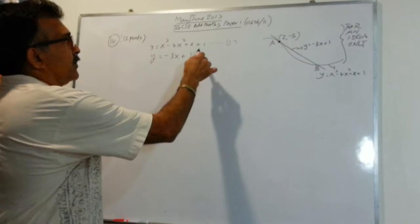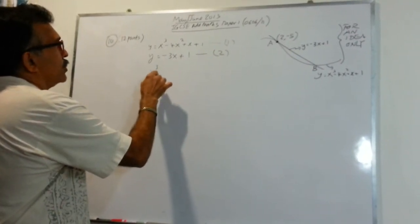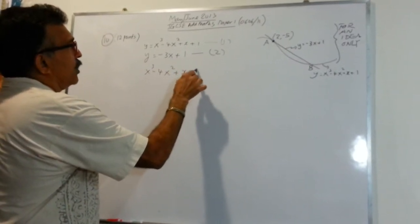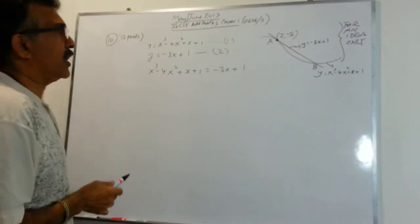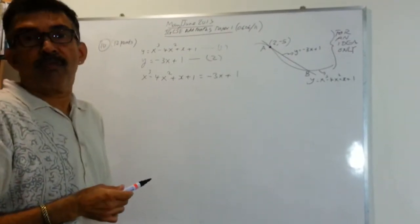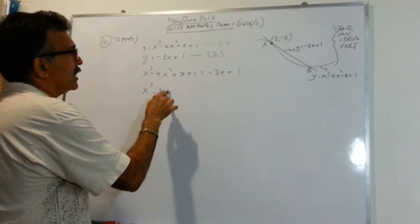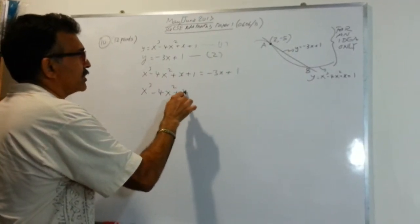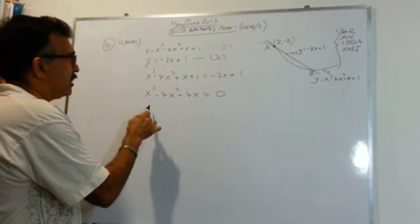negative 3x plus 1. So we are going to solve in simultaneous fashion. So let's call this equation 2. So we can write x cubed minus 4x squared plus x plus 1 equals minus 3x plus 1. We are trying to find the coordinates of B. So when you clean this up, you will get x cubed minus 4x squared. I have x here and I have negative 3x so I can bring it across here. So I will have 4x and the ones will go and I am done.